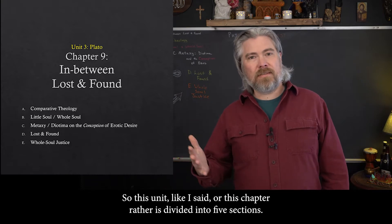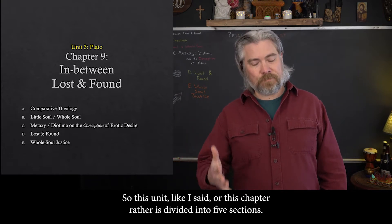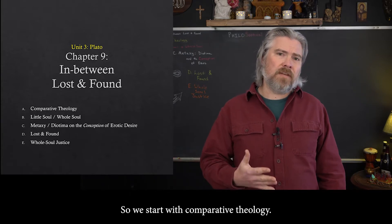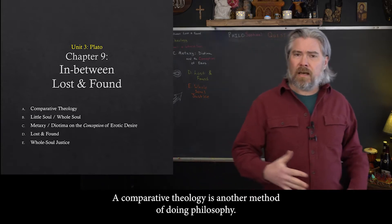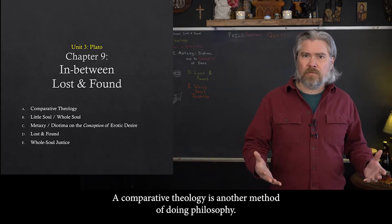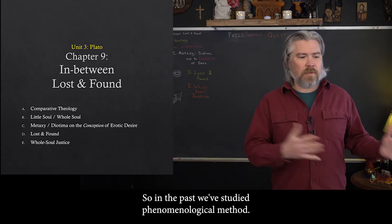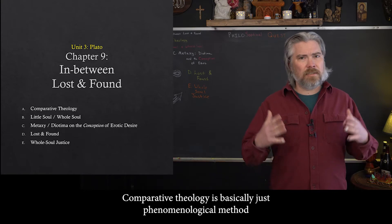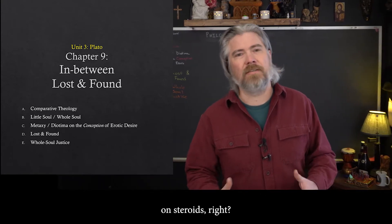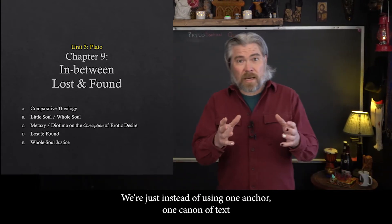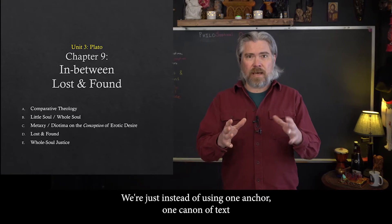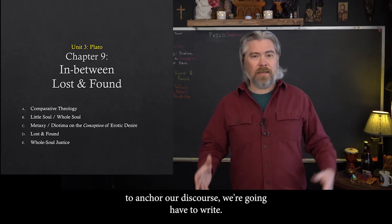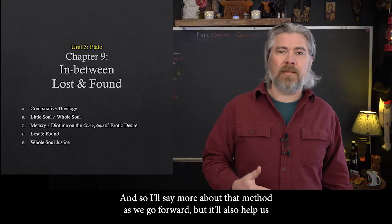This chapter is divided into five sections. We're going to start with comparative theology, which is another method of doing philosophy. Comparative theology is basically phenomenological method on steroids — instead of using one anchor, one canon of text to anchor our discourse, we're going to have two. I'll say more about that method as we go forward.